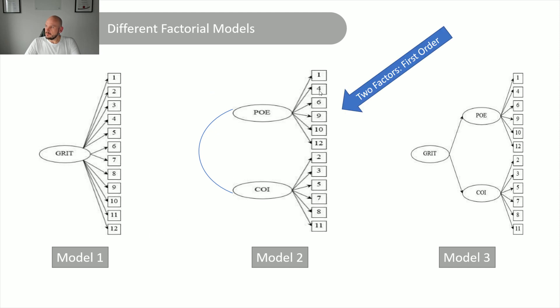The second model is, you can see, it's exactly the same as the first model, but now there are two first order factors, right? Now, what makes this different than a normal one-factor model is that there's a relationship, there's a covariance between interest and perseverance, right? So there is this covariance, correlation relationship between these different factors, because we assume that they are measuring the same thing.